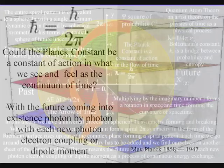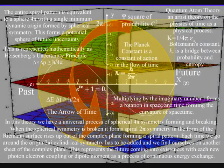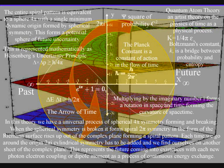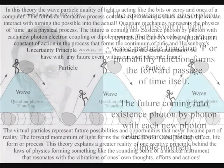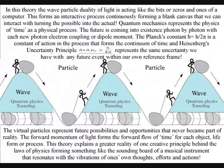The universe is a continuum formed by the spontaneous absorption and emission of light represented by the probability function or quantum wave particle function. This is explained mathematically by Schrödinger's wave equation. The wave-particle duality of light and matter in the form of electrons is forming a blank canvas that we can interact with, forming the possible into the actual.